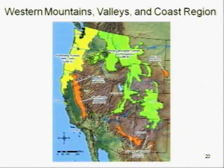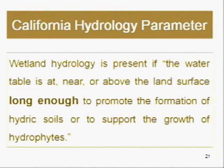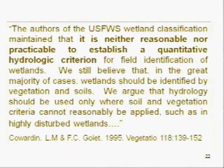I'd now like to discuss the three wetland parameters — hydrology, hydric soils, and hydrophytic vegetation — in the context of the Coastal Act and the Commission's regulations. Although the presence of wetland hydrology is obviously a parameter under the Commission's wetland definitions, there is no statutory quantitative standard for the frequency or duration of standing water or saturated soils. The regulations simply require an area to be wet enough, long enough, and frequently enough to promote the formation of hydric soils or to support wetland vegetation. Lewis Cowardin, in a 13-year retrospective on the U.S. Fish and Wildlife Service wetland classification, stated that it is neither reasonable nor practicable to establish a quantitative hydrologic criterion for field identification of wetlands, and that in the great majority of cases wetlands should be identified by vegetation and soils.